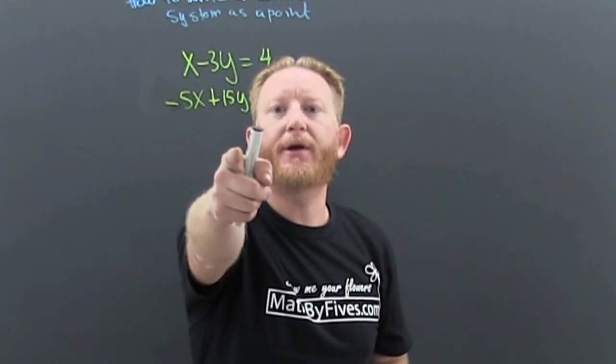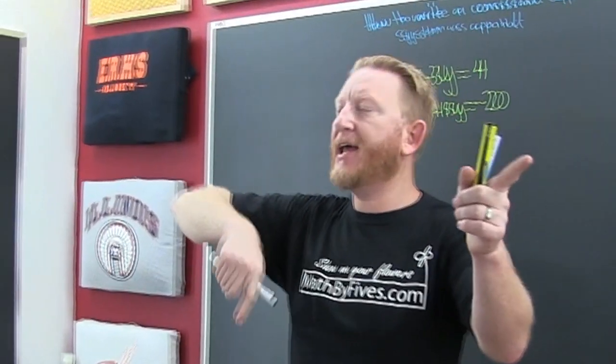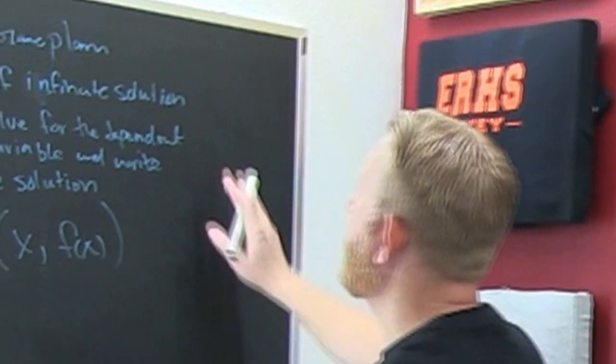How are we going to write solutions to consistent, meaning it has a solution, and dependent, means it has infinite solutions? How do we write it as a point? I'll point out that we have a game plan, well kind of.